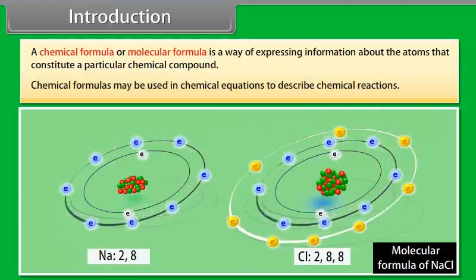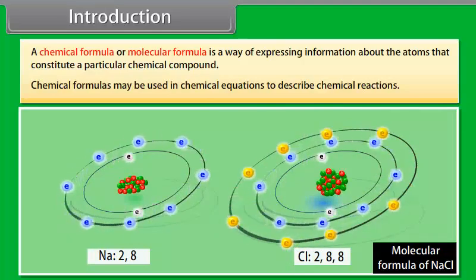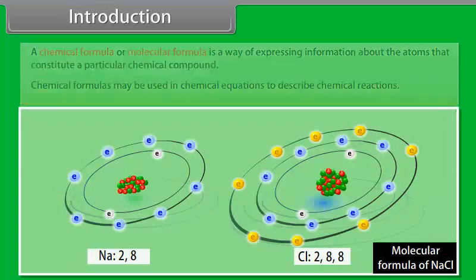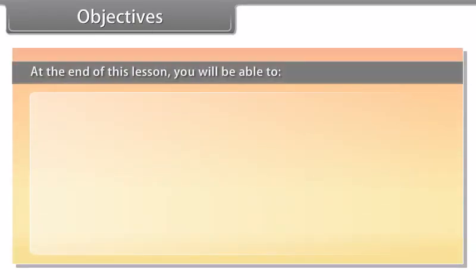Chemical formulas may be used in chemical equations to describe chemical reactions. For ionic compounds and other non-molecular substances, an empirical formula may be used in which the subscripts indicate the ratio of the elements.